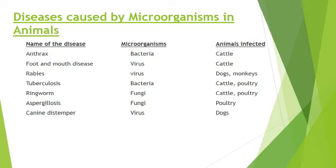The next disease is tuberculosis. Tuberculosis occurs due to bacteria, and by this disease, cattle and poultry get infected. Poultry means birds. This is again a disease of the lungs. Then the next disease is ringworm — it is a fungal disease caused by fungus, and it occurs again in cattle and poultry. In this case, patches appear on the skin.